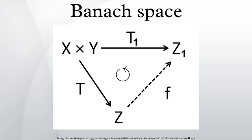The main tool for proving the existence of continuous linear functionals is the Hahn–Banach theorem. Let X be a vector space over the field K = ℝ or ℂ. Let further Y ⊂ X be a linear subspace, p: X → ℝ be a sublinear function, and φ: Y → K be a linear functional so that Re(φ(y)) ≤ p(y) for all y in Y.